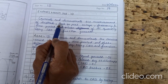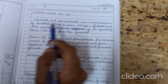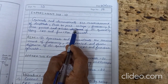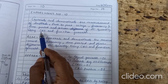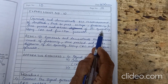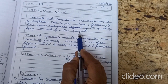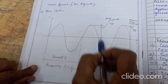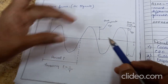In this experiment, we are going to generate and demonstrate the measurement of amplitude, peak-to-peak voltage, frequency, and time period of an AC sinusoidal waveform using a CRO and function generator. Once we get the sinusoidal waveform, we should measure these parameters.